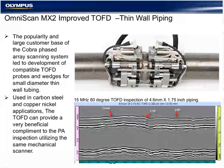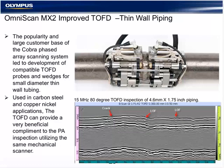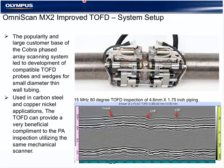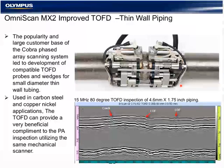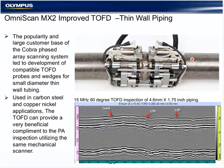Improved TOFD for the MX-2 also includes probes, wedges, and mechanics for components that were traditionally too thin or too small in diameter to inspect. We're having success now with higher frequency, small diameter, thin wall components. In this case, we see an 80-degree TOFD L-wave inspecting a 1.75-inch diameter, 4.6-mm thick component using the COBRA scanner system.